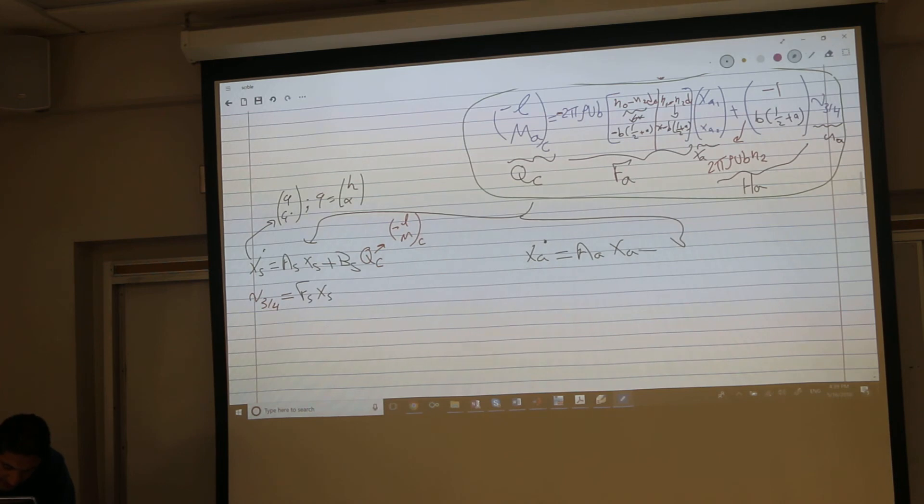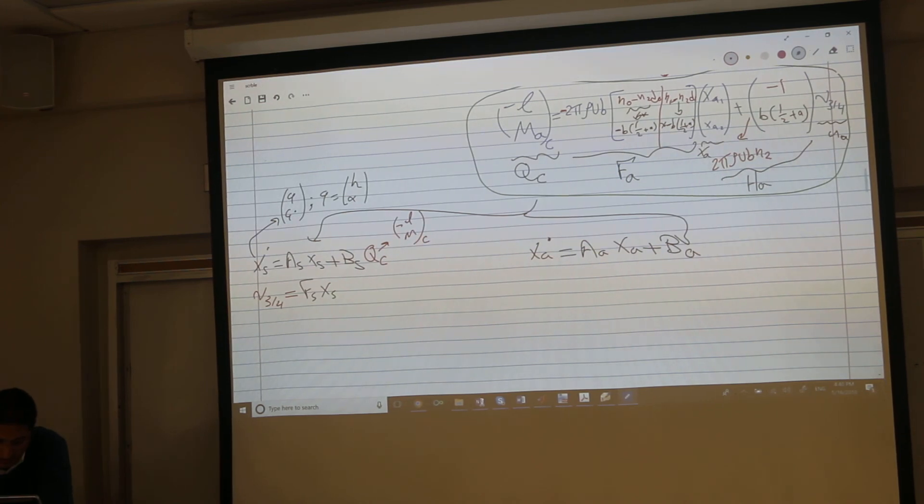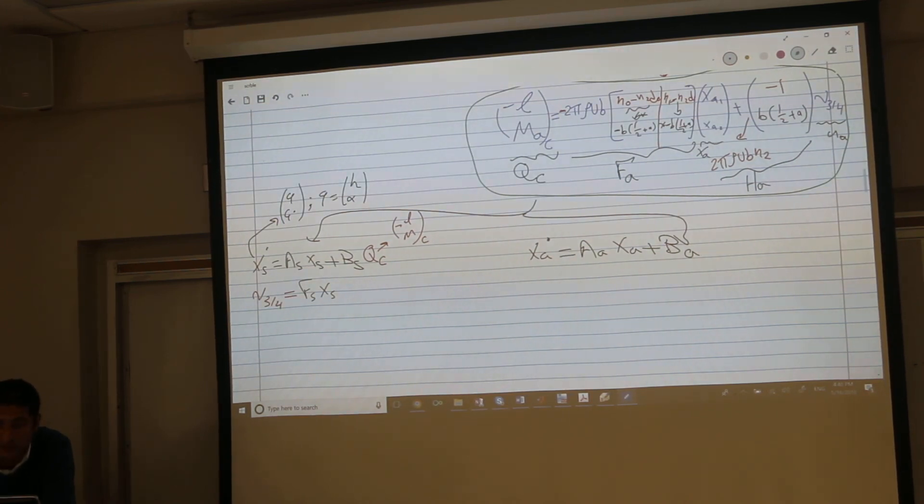For aerodynamics, here is X aerodynamics. It's A aerodynamics times X aerodynamics, we already developed that. B aerodynamics times the input to the aerodynamics. What's the input to the aerodynamics? We select the particular thing to be the input to the aerodynamics. V3. Very good.